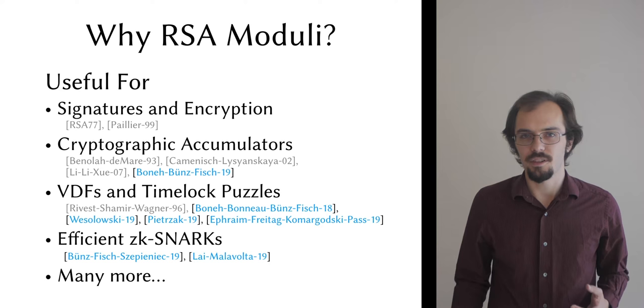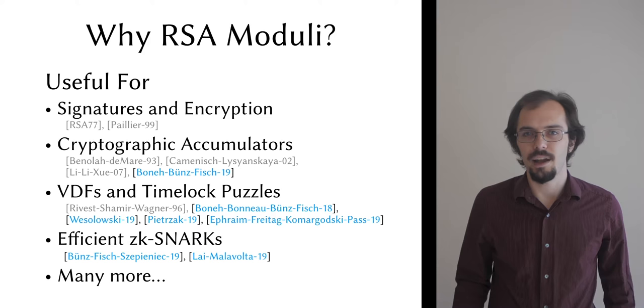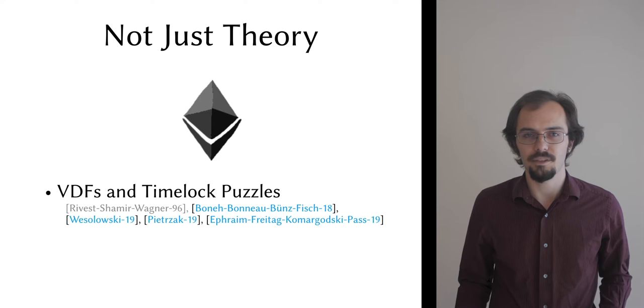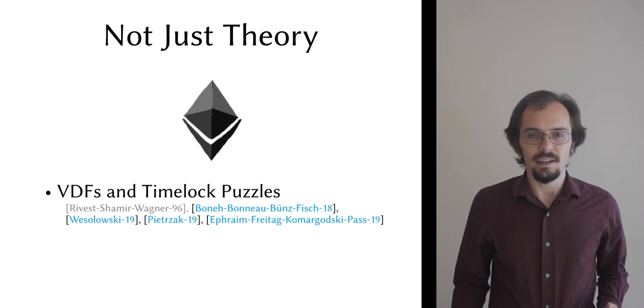However, there's no way that we know of to sample a biprime for which nobody knows the factors using only public randomness, so the remaining option is to distribute sampling among many parties using multiparty computation. I should point out that this isn't merely a theoretical concern. The Ethereum Foundation has publicly announced an intention to migrate to RSA-based VDFs, which means they need secure biprime sampling in the real world, and they need it to be efficient for many parties.